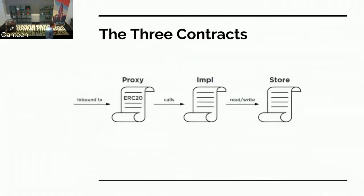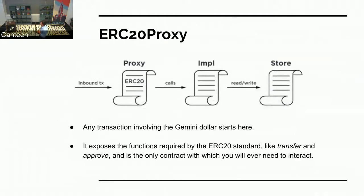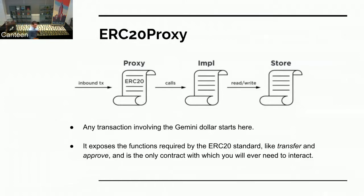Our solution was three contracts. Every inbound transaction starts at the ERC-20 proxy contract, which then calls the impl contract, which then calls the store contract. ERC-20 proxy is like an eternal contract — it's published to Ethereum mainnet once and never going to change. All it does is implement the prototypes of the ERC-20 standard and expose them to the outside world. Any transfer, anything having to do with the ERC-20 standard will start here 100% of the time. It just says, thank you for starting with me — I'm going to pass this off to impl.